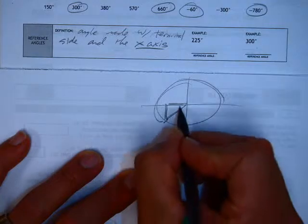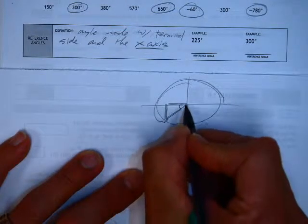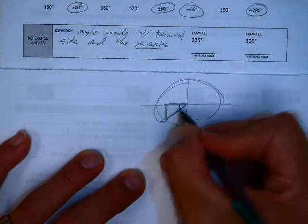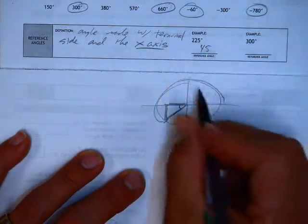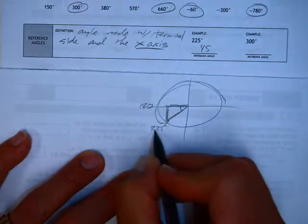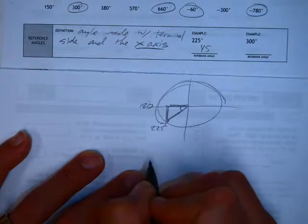That's a 45-45-90 triangle. So it's this angle that's the terminal side and the x-axis. It's always the x-axis. So if you know enough about your triangles, you know that that's a 45-degree angle. If you're not sure, well, that's just 180 and that's 225. You can simply subtract those two and you'll find that that's 45 degrees.